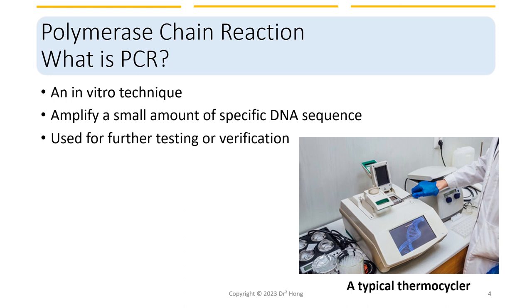Today, basic PCRs are performed in benchtop machines called thermocyclers, which are quite portable small devices. The thermocycler can rapidly heat up and cool down on its own to temperatures necessary for the reaction to happen. But in the old days, my professors told me they had to use several big water baths and manually dip the reaction mixture into different water baths to get the temperature right for the reaction. It was quite hectic in those days.